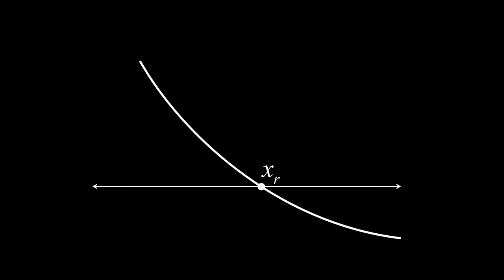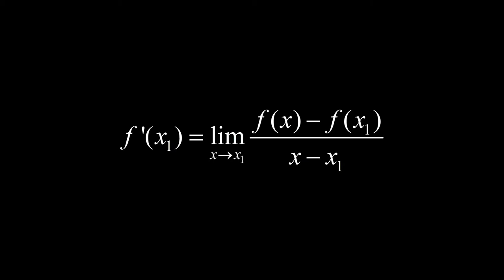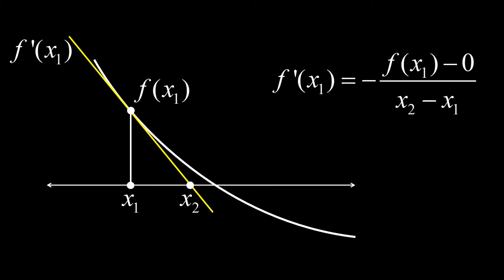Makokompute ngayon ang value ng function sa x1, pati na rin ang derivative ng function sa x1. Ang derivative ay ang slope ng tangent line. Ang intersection ng tangent line at ng x-axis ang magbibigay ng pangalawang estimate kay xr. As mentioned, ang derivative ay ang slope ng tangent line sa x1. Kaya equal ito sa rise over run or f of x1 minus 0 over x1 minus x2. Masasolve ngayon mula sa equation na to si x2.